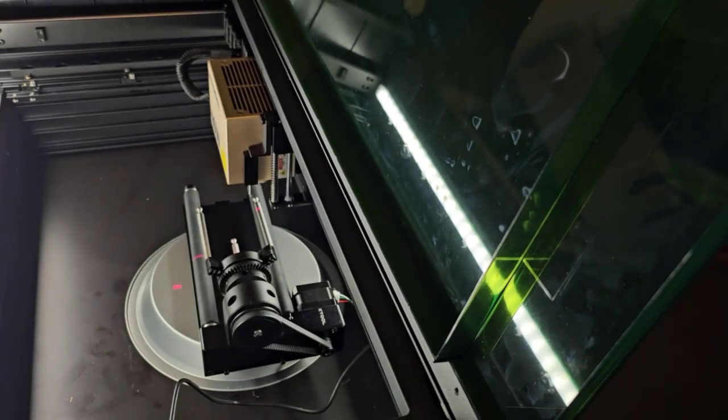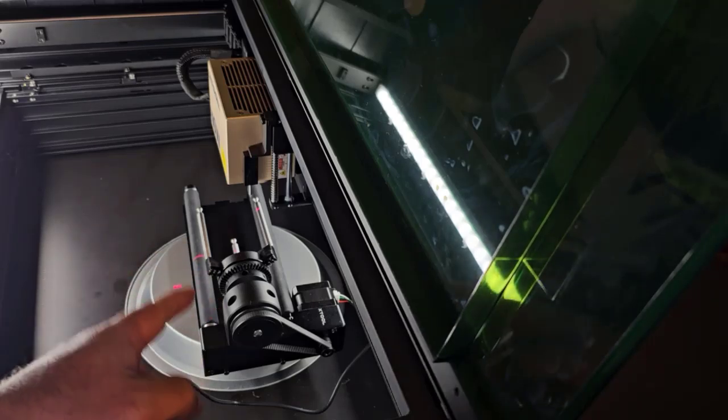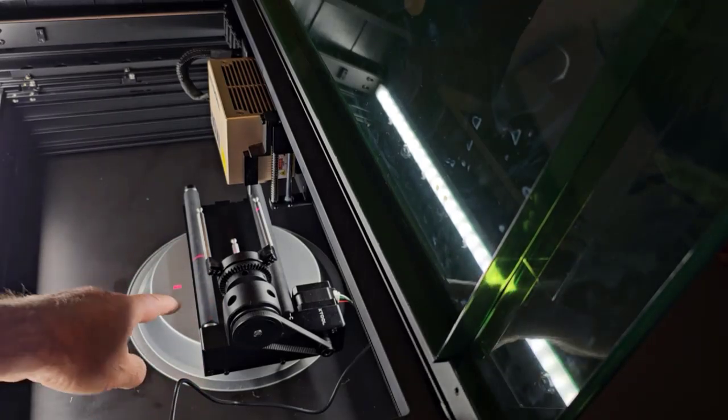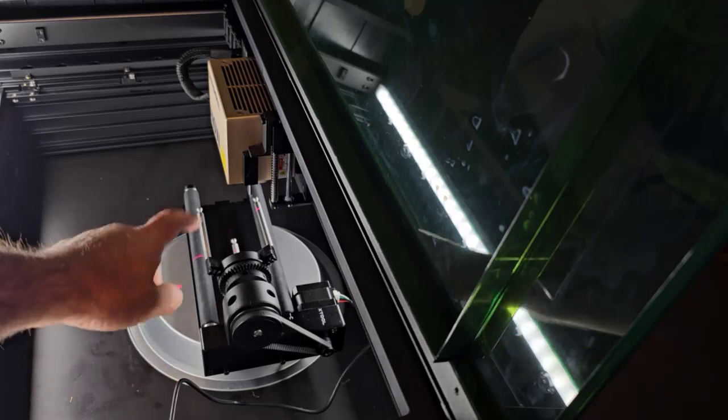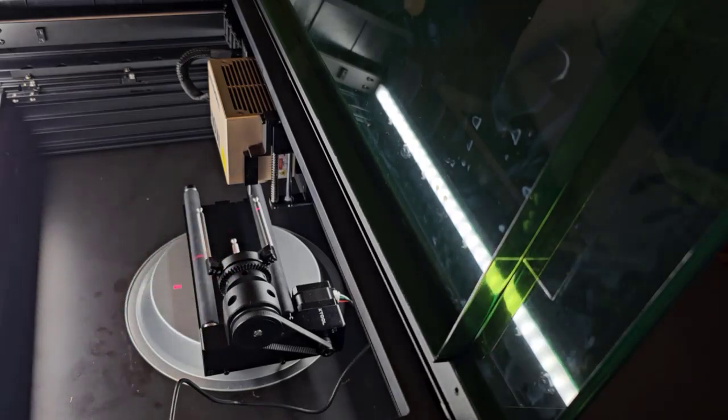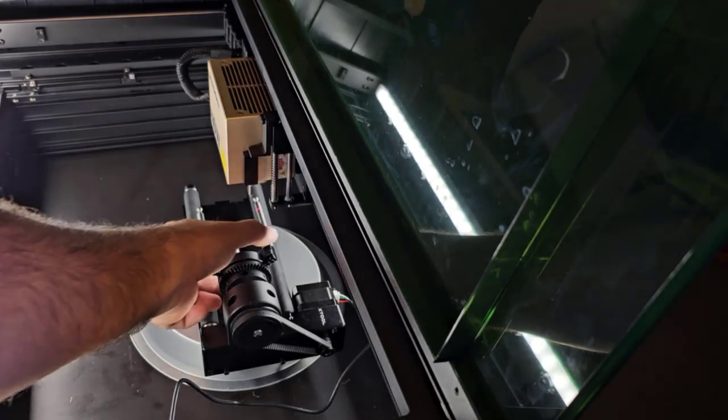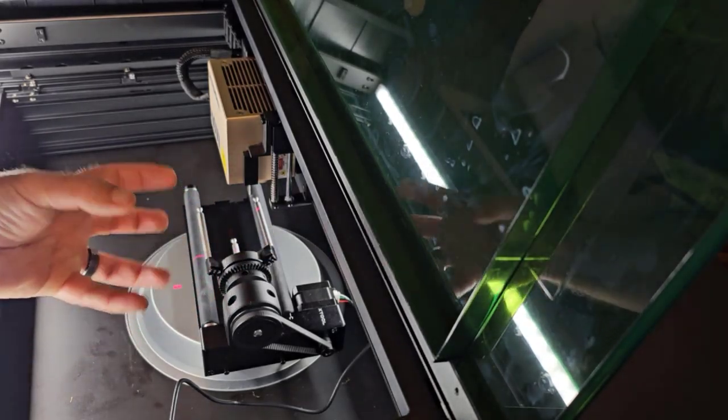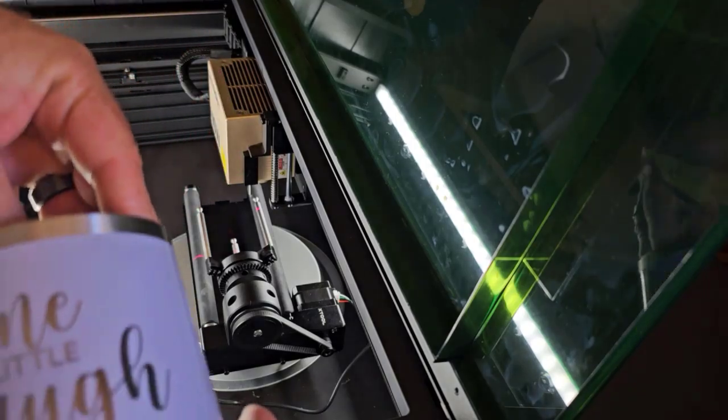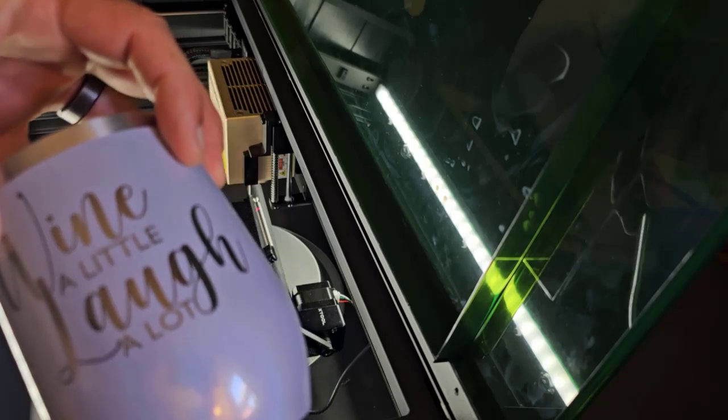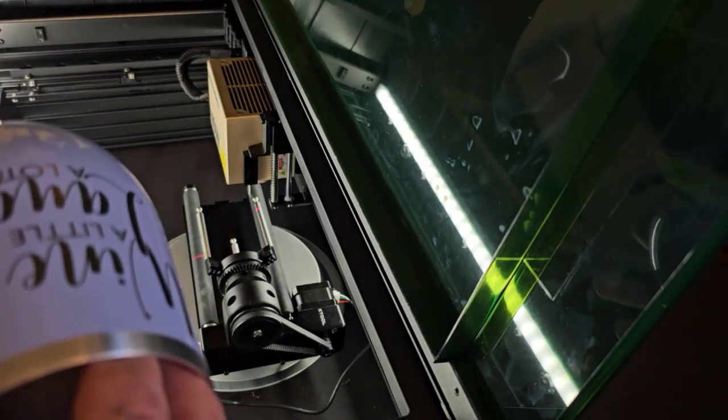All right, so that's the Xtool S1 40 watt laser engraver with the RA2 Pro rotary in it. It has the rollers and it also has the chuck. You can switch between the two, has different kinds of clamps that you could put on the chuck to hold different things. I could have put the plastic ones in and held it from inside there, or put those in and held it from outside there. I put the metal ones on the inside because it seemed to work really well.